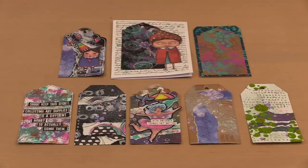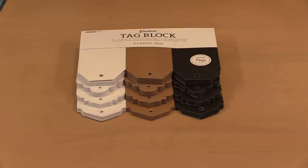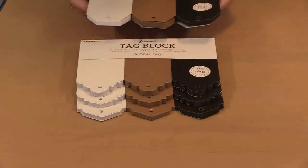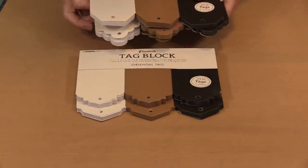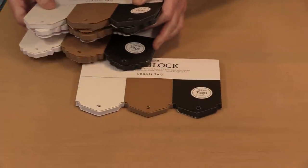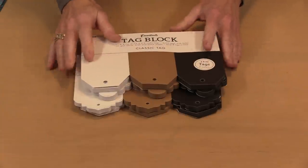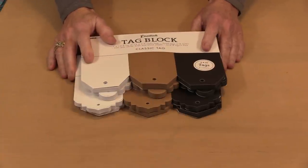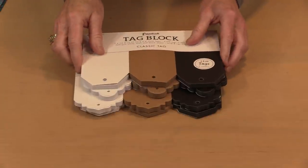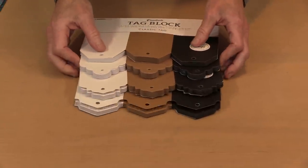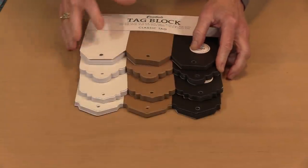In today's video, I'm working with the four styles of StudioLite Essentials Tag Blocks and using a variety of media and techniques on them. You'll find links to the products down below. There are four styles of tag blocks: Classic, Global, Oriental, and Urban. The tags all measure approximately 2 7/8 by 5 7/8. The difference is the profile along the top where the hole is.